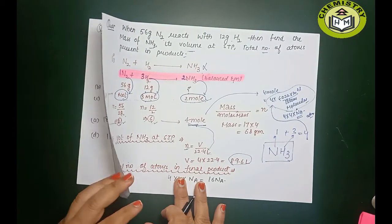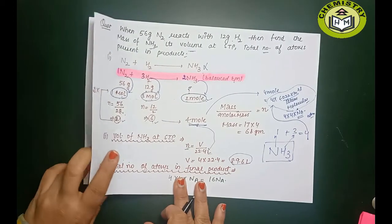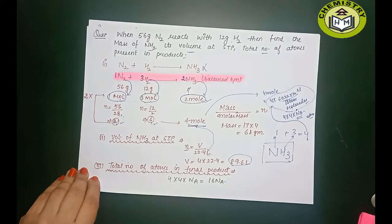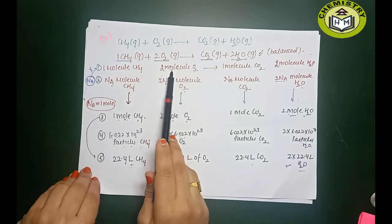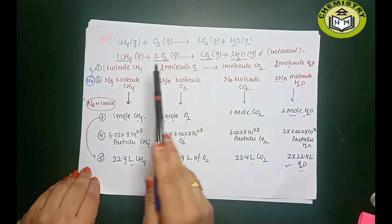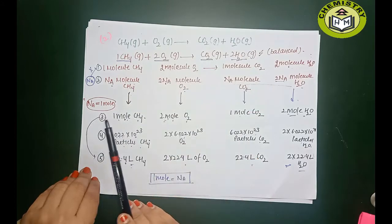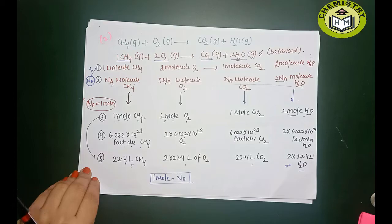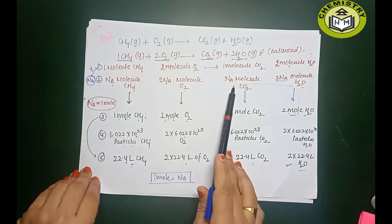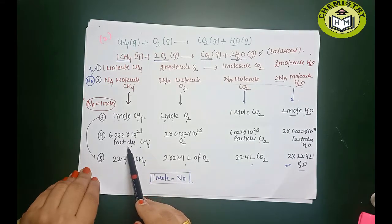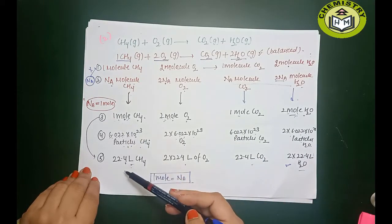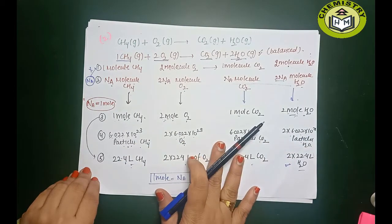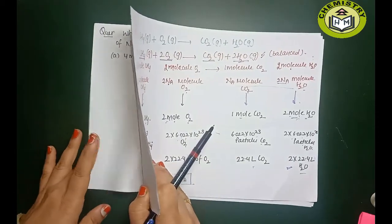This is all about stoichiometric coefficients. To summarize: write the chemical reaction, then write 1 molecule, 2 molecules, etc. per coefficient. Multiply by Nₐ to get particles. Since Nₐ = 1 mole, convert to moles. Moles give particles (×Nₐ) and volume (×22.4 L). Whatever is asked, give that answer. This is all about stoichiometric coefficients.